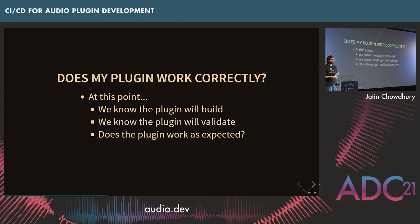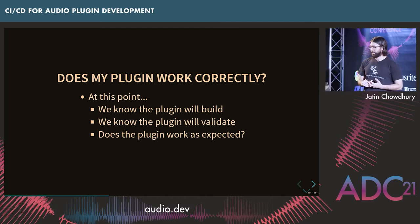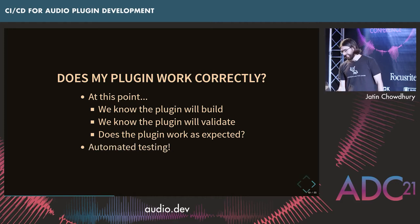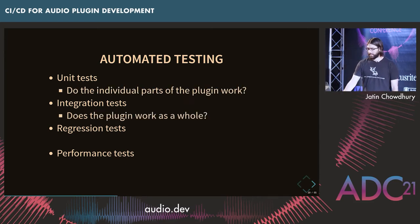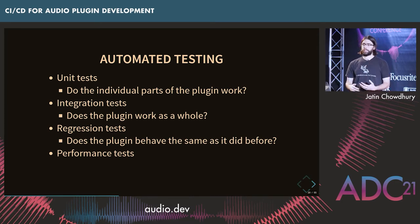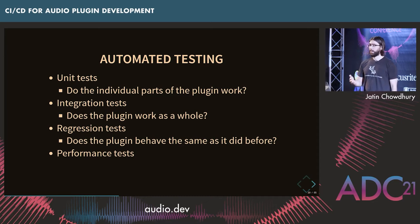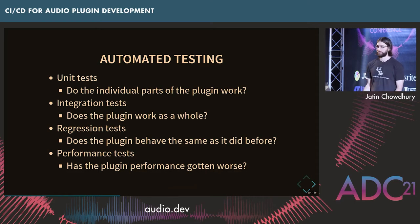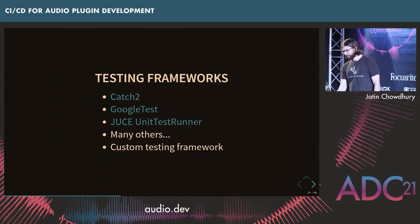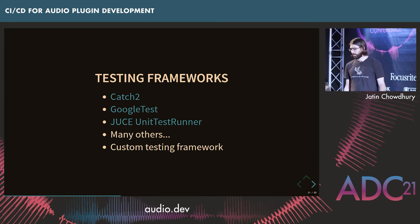So we know our plugin builds and will validate. But does it actually do what we think it will do? Now we need to test it. There are lots of different types of tests: unit testing, integration testing, maybe regression tests to make sure your plugin sounds the same as it did a week ago and no weird bugs have slipped into the audio output. And maybe performance tests to make sure you didn't accidentally make the plugin 10 times slower. There are lots of great frameworks you could use, and you can also roll your own — it's not too hard.